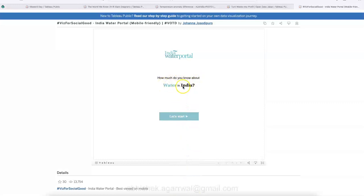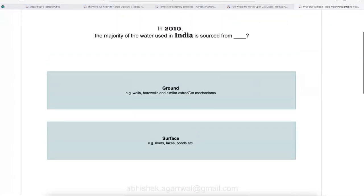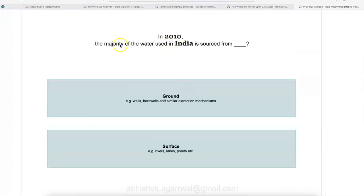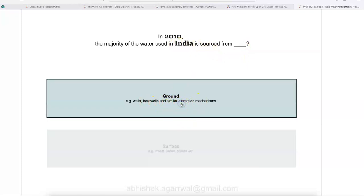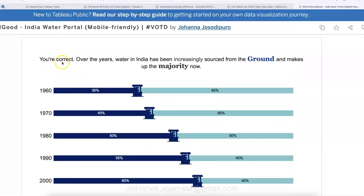How much do you know about water in India? Let me expand this. In 2010, the majority of India Water used in India was from. So fill in the blanks. In India, source from ground, that means wells, bore wells, similar extraction mechanism or surface. So I'll click on ground. Click to proceed to see the result. You are correct.